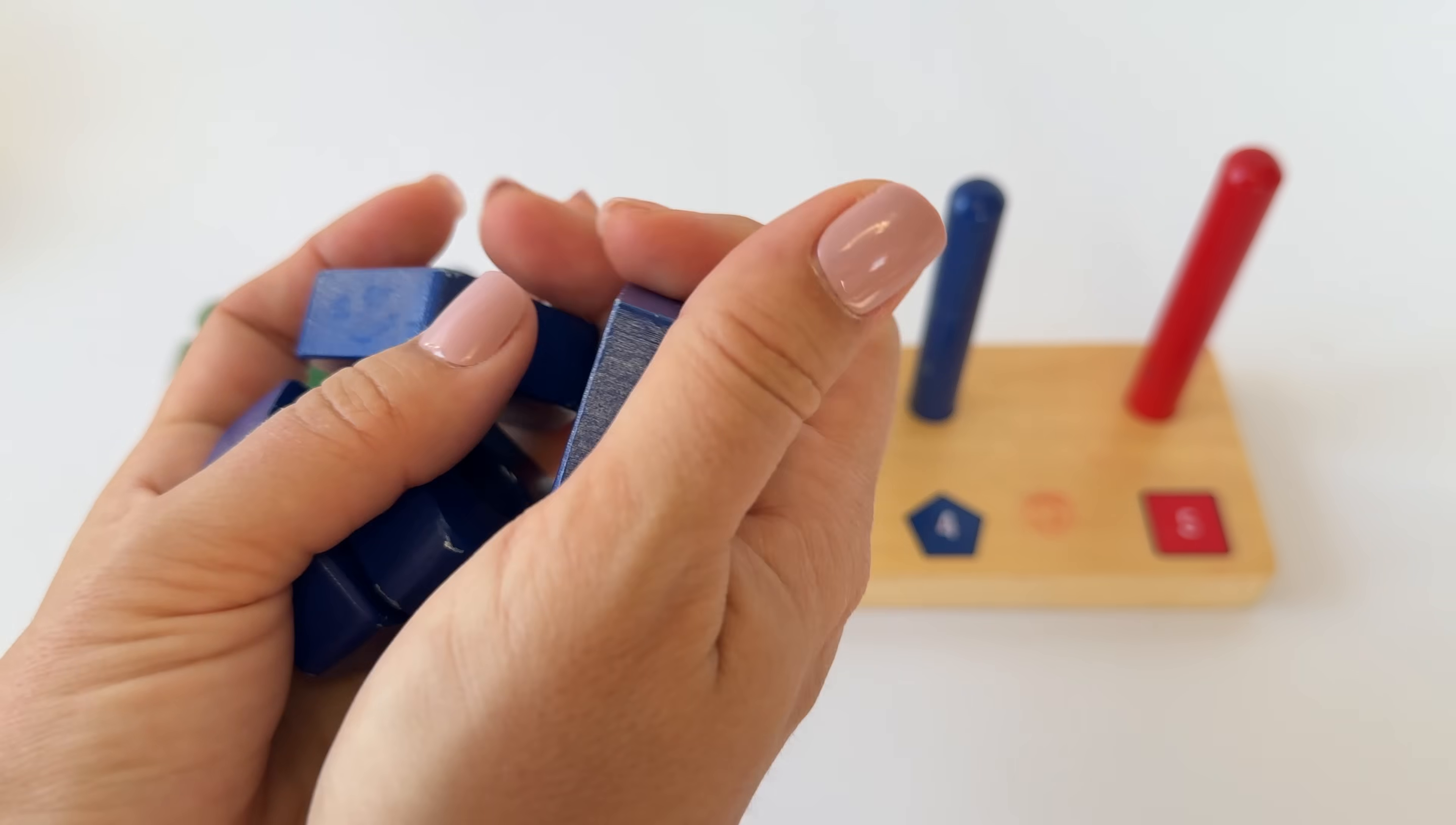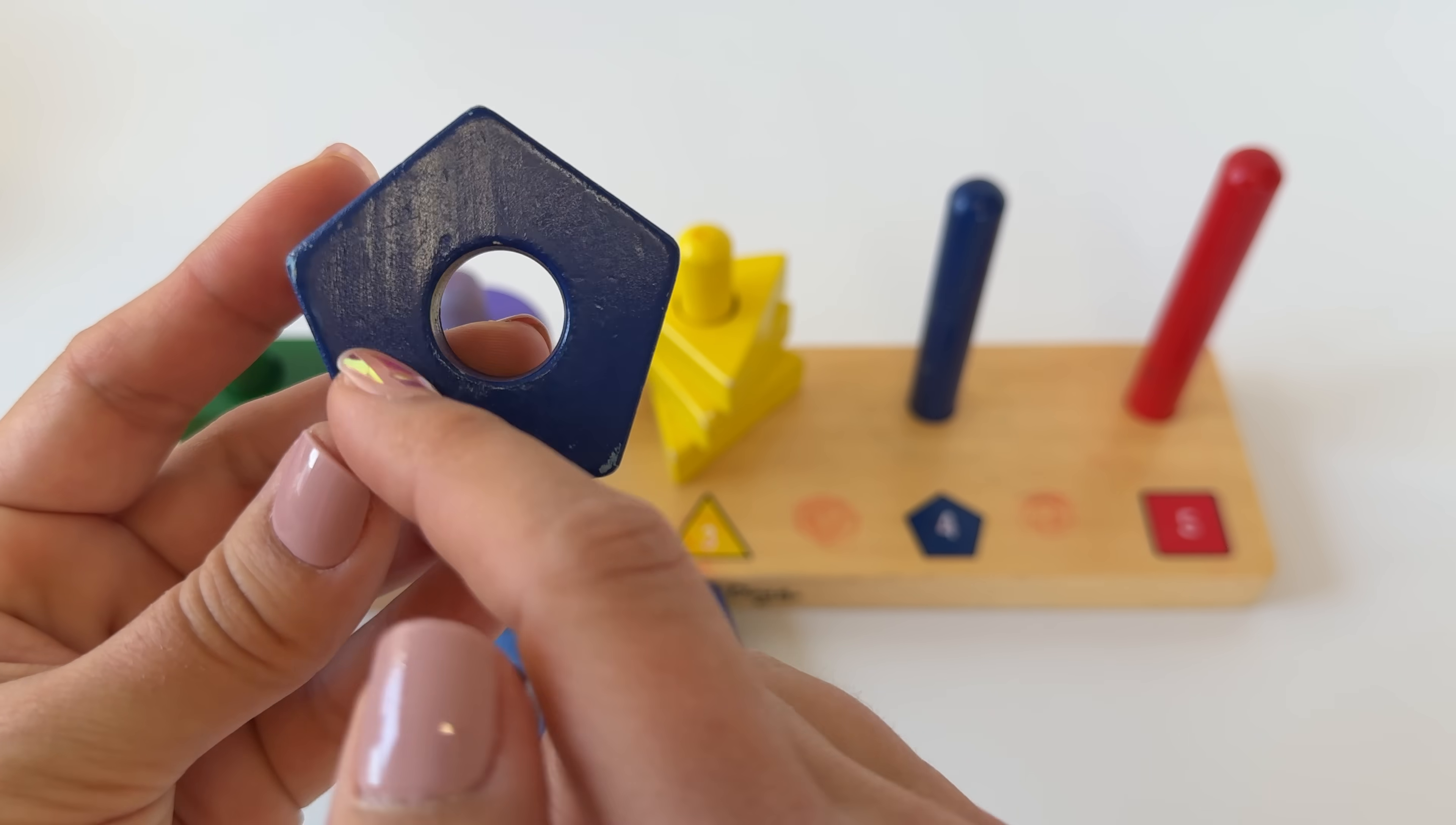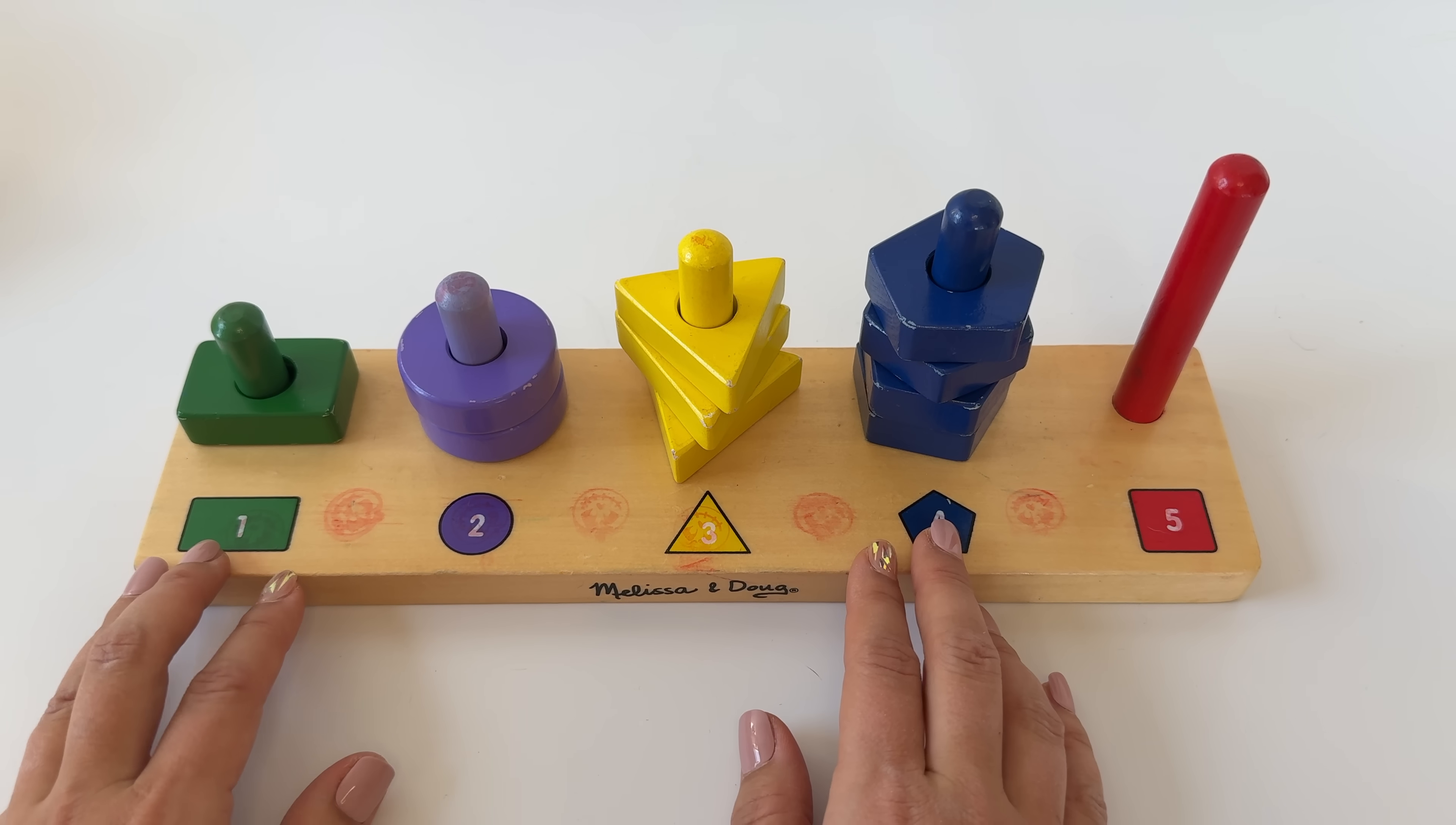Here are some blue pentagons. Let's count the sides. One, two, three, four, five. The pentagon kind of looks like a house. It has a roof on top, sides, and the ground. Okay, let's put the blue pentagons onto the rod. One, two, three, four. Four blue pentagons.